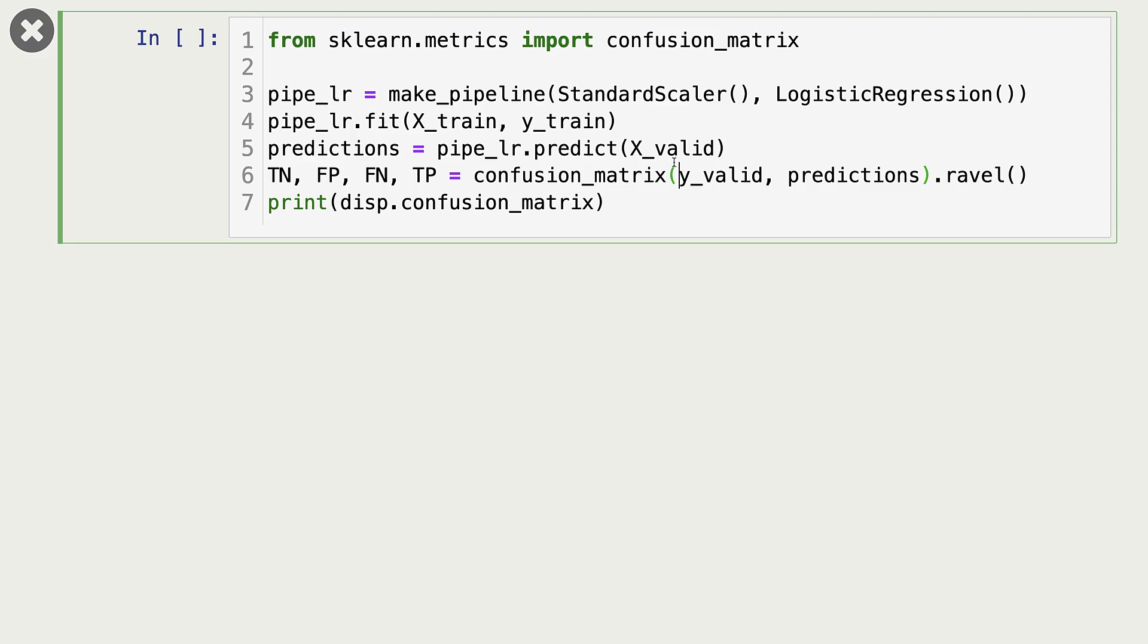Just to remind ourselves, I'm creating our logistic regression pipeline again using standard scaler and logistic regression. I'm fitting our pipeline, predicting with our pipeline on the validation set, and then calling this confusion matrix function to get true negatives, false positives, false negatives, and true positives. And here is how our confusion matrix looks like.